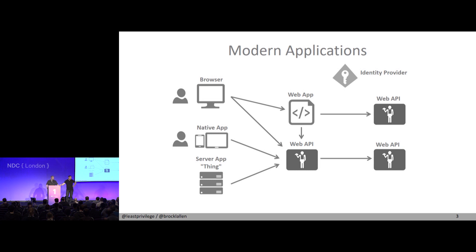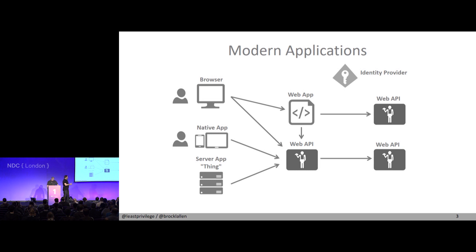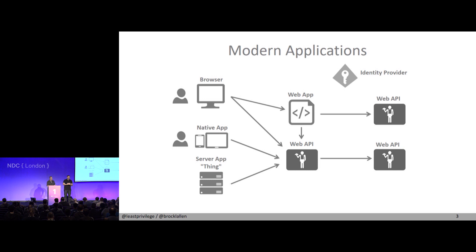It's a very tempting idea to now put all of your authorization logic into the identity provider. We have this central thing, we have this new hammer called claims — now everything will become a nail. But the problem is: identity is universal. I am the same Dominic wherever I log in, but permissions are very application-specific. I might have different permissions in application A versus application B, even if they share the same identity provider. Mixing the two concepts will lead to problems.